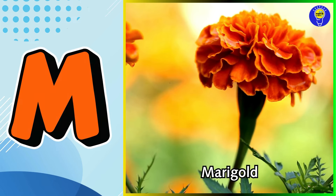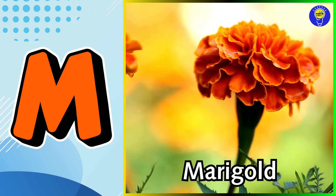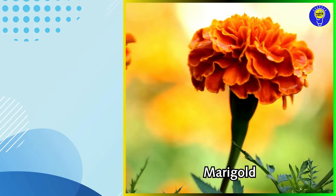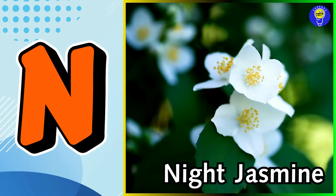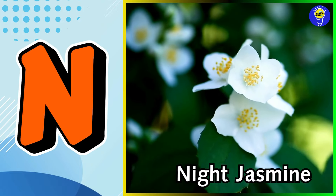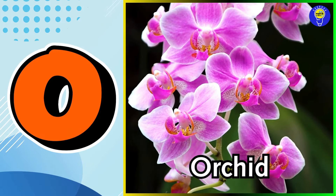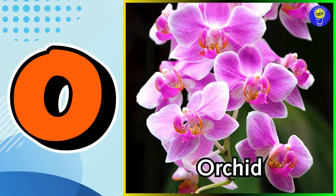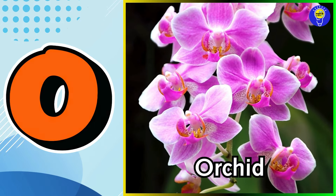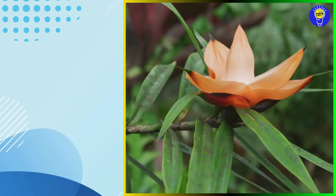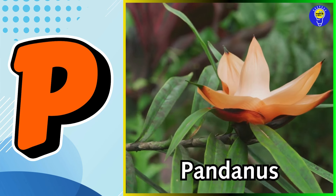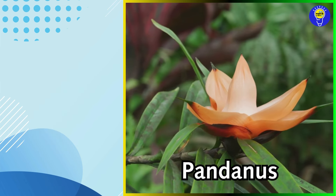M is for Marigold flower. M, M. Marigold flower. N is for Night Jasmine flower. N, N. Night Jasmine flower. O is for Orchid flower. O, O. Orchid flower. P is for Pandanus flower. P, P. Pandanus flower.